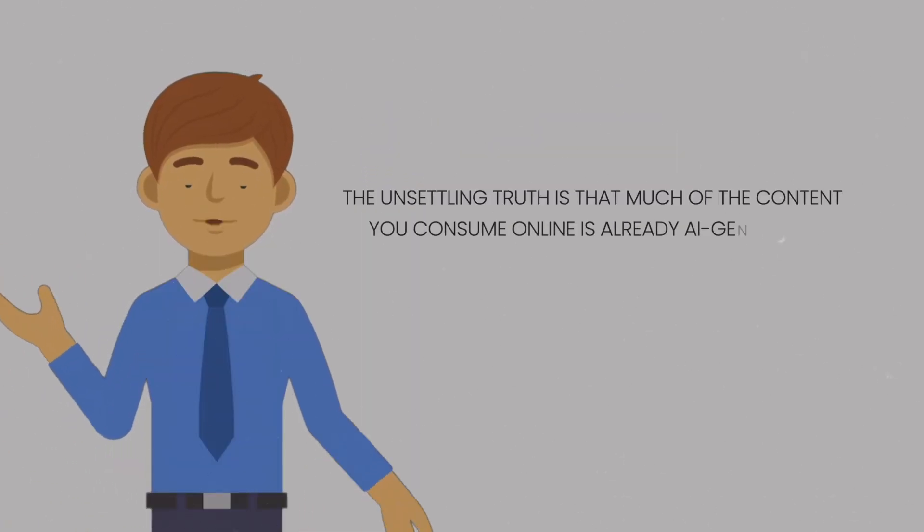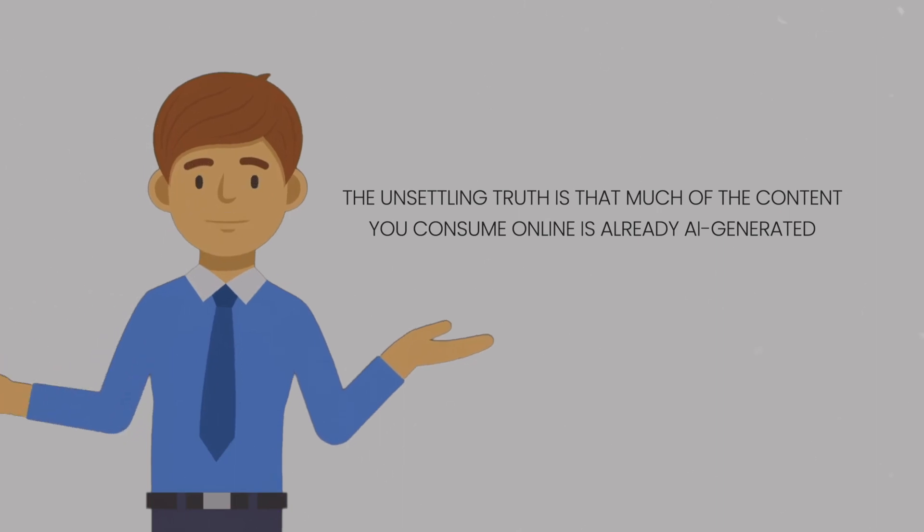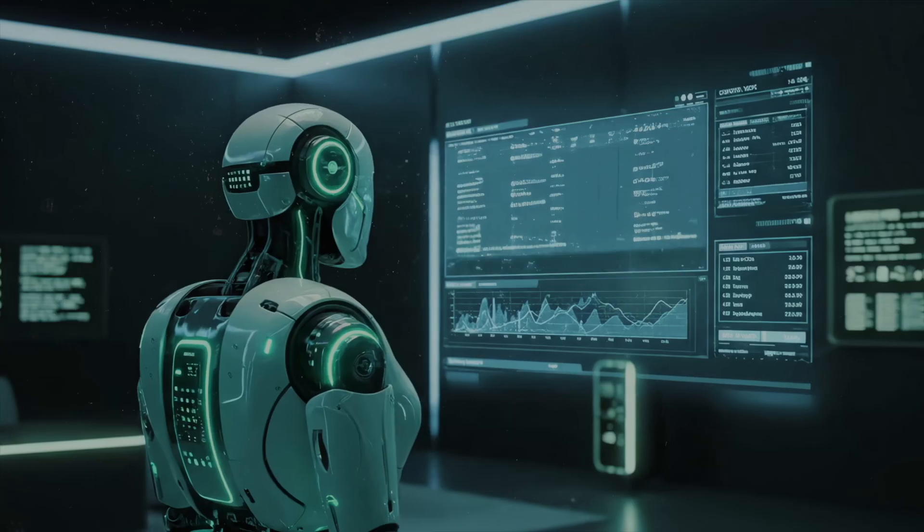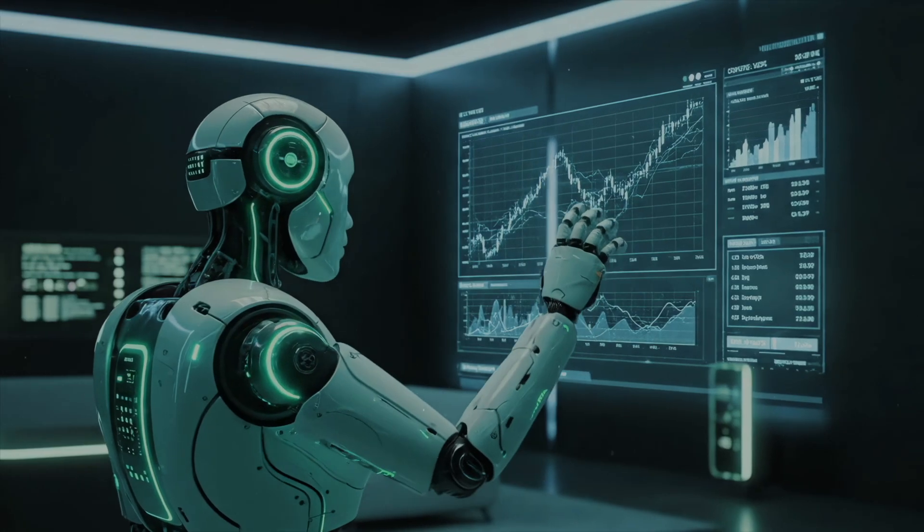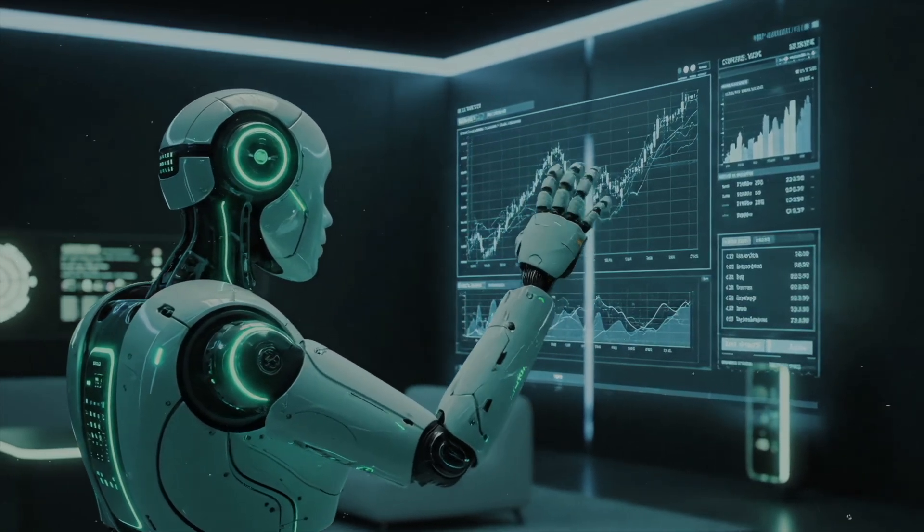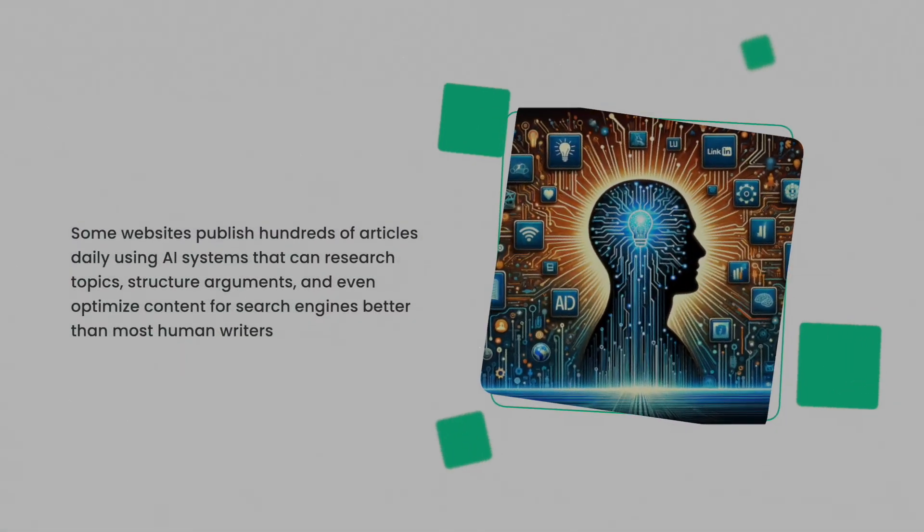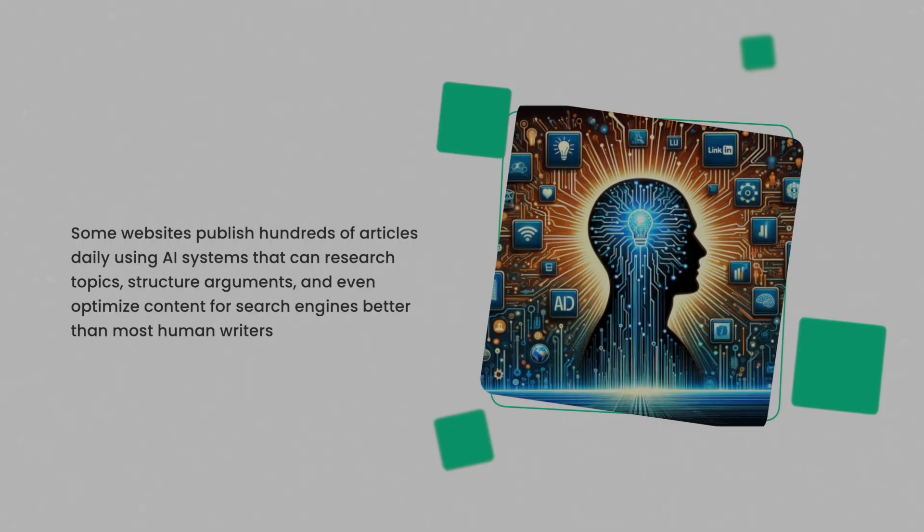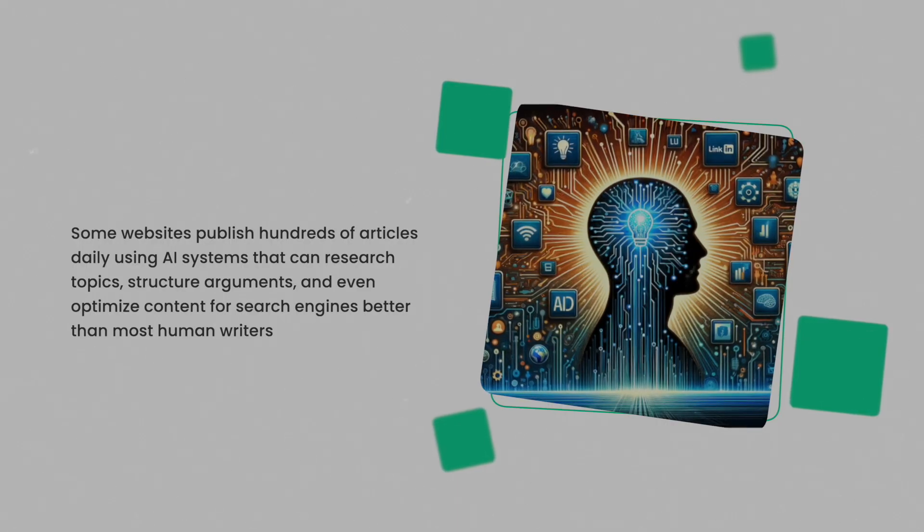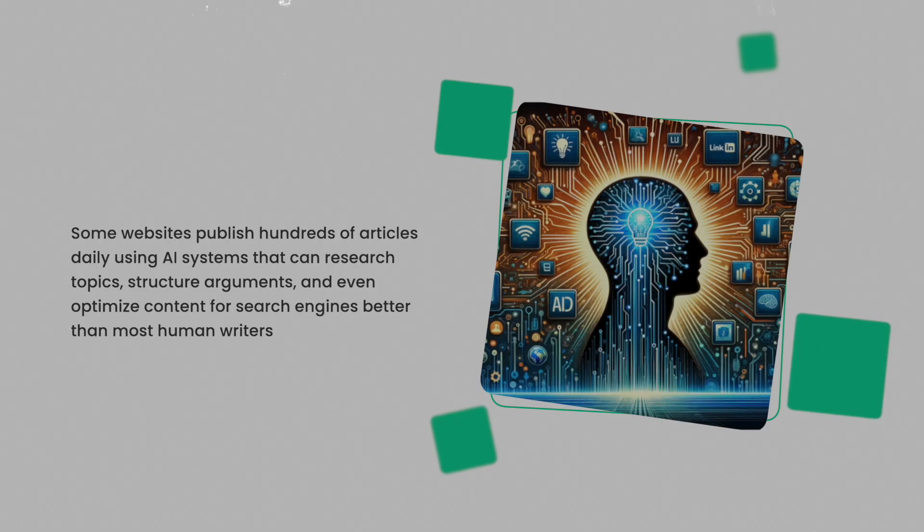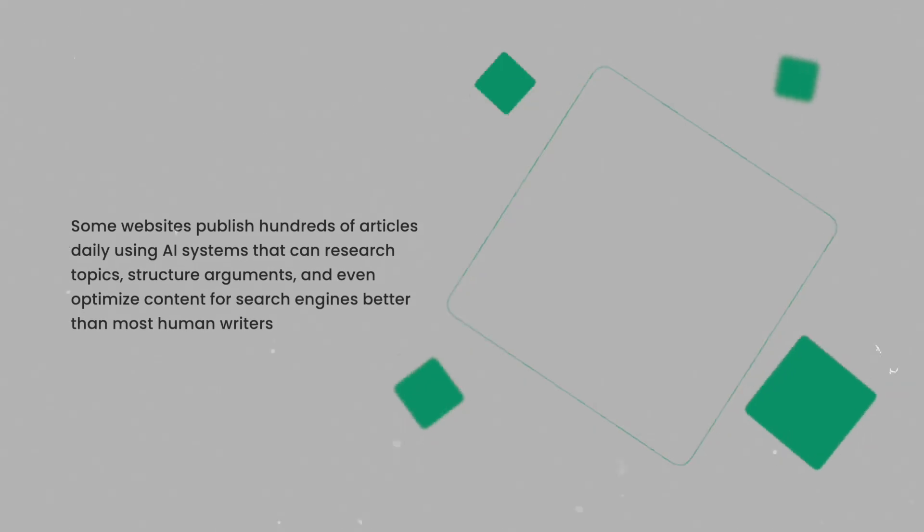The unsettling truth is that much of the content you consume online is already AI generated. News outlets use AI to write sports recaps, earnings reports, and weather updates. Some websites publish hundreds of articles daily using AI systems that can research topics, structure arguments, and even optimize content for search engines better than most human writers.